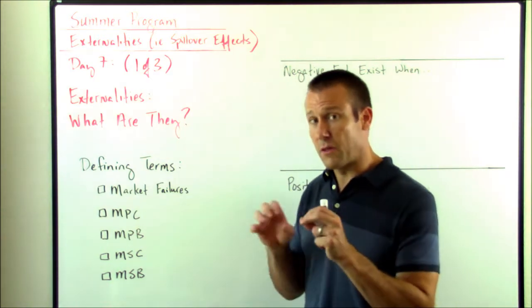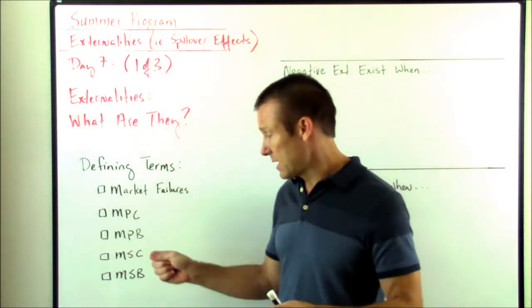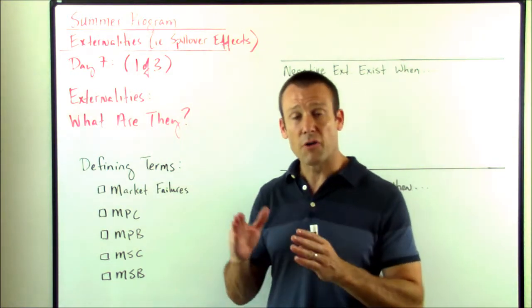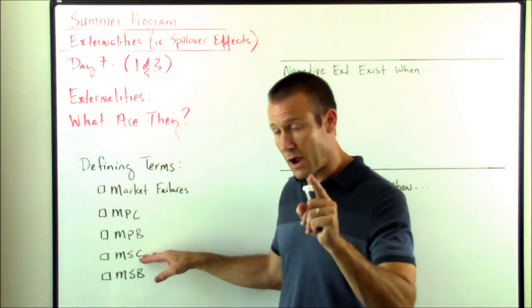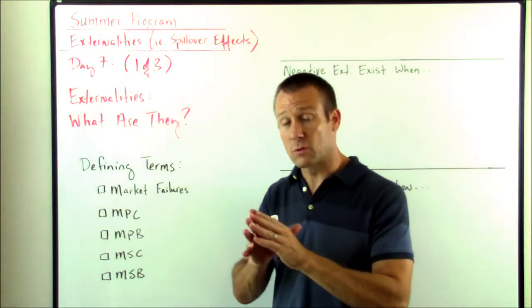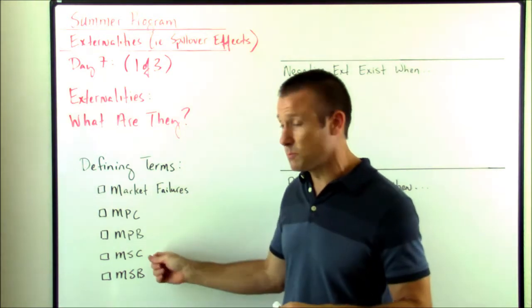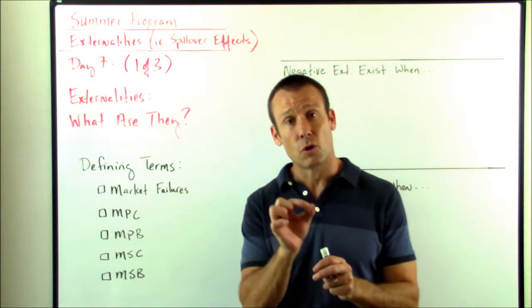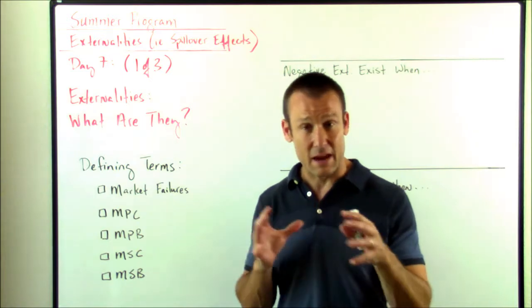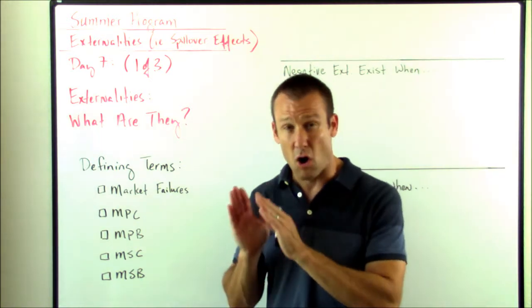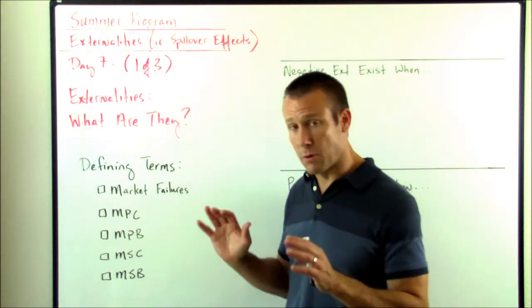Marginal Social Cost is the marginal total cost of that good being produced. This takes into account all spillover effects, and it also takes into account marginal private cost — it's both. Marginal Social Cost is marginal total cost. Marginal Social Benefit is also marginal total benefit — it's taking everything into account. Marginal Social Benefit takes into account all spillover effects plus the marginal private benefit, taking both of those into account.